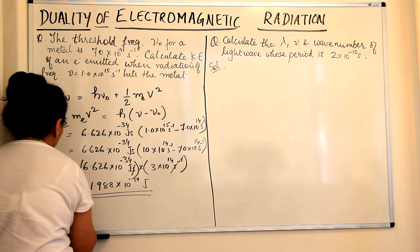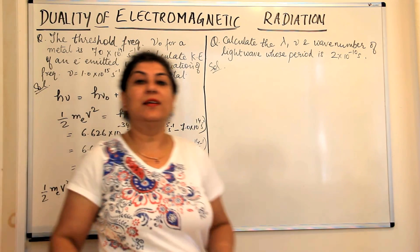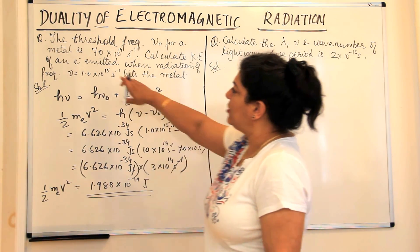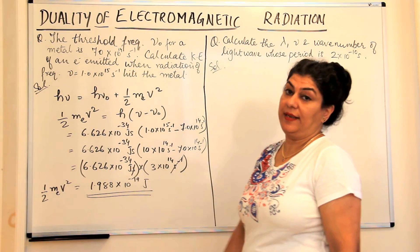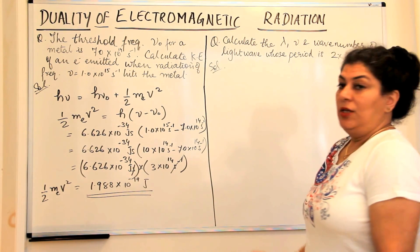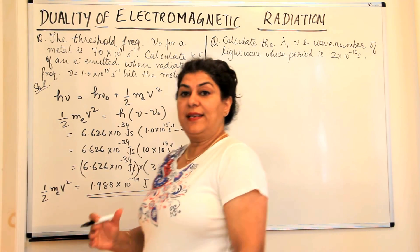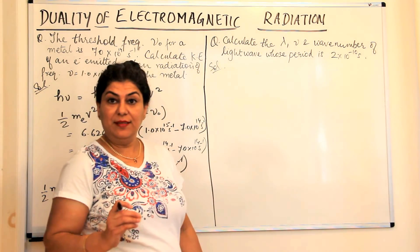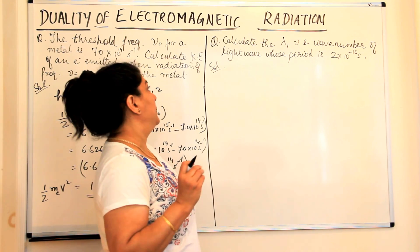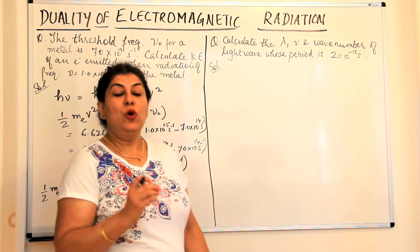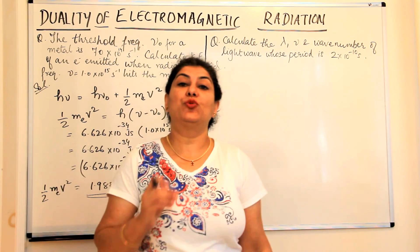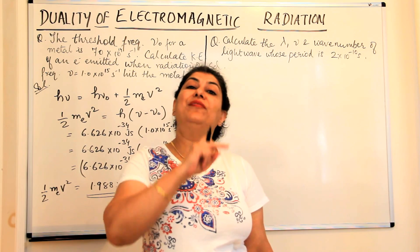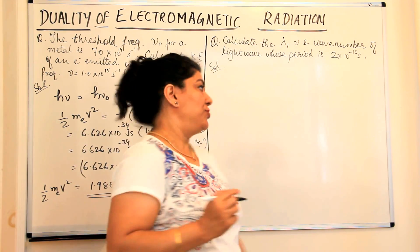That is ½mₑv², the kinetic energy of the photoelectron ejected — the electron emitted would have this kinetic energy. So that was the first problem. Let us now move to the next problem. You have to calculate the wavelength, the frequency, and wave number of a light wave whose period is given to us.